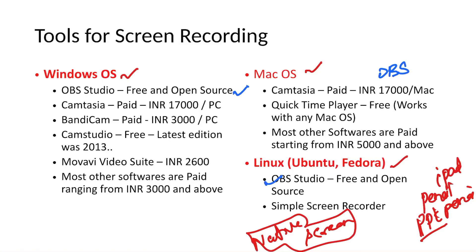In Mac OS, there is something called QuickTime Player, which is very native to Mac OS. It supports audio recording, screen recording, and movie recording — all three options enabled by default. Most other software for Mac starts from INR 5000 and above. In Linux OS, since the OS itself is open source and free, most software available is also open source, like OBS Studio and Simple Screen Recorder — a very simple and powerful screen recorder for Linux.